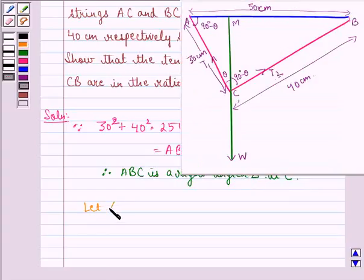Let angle ABC be theta. Now, this angle is theta therefore angle BAC is 90 degrees minus theta.